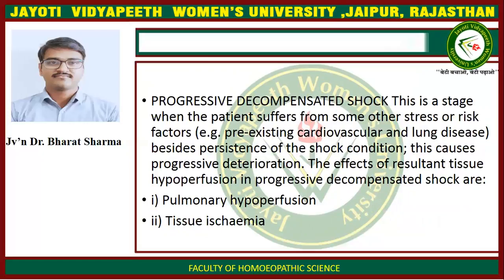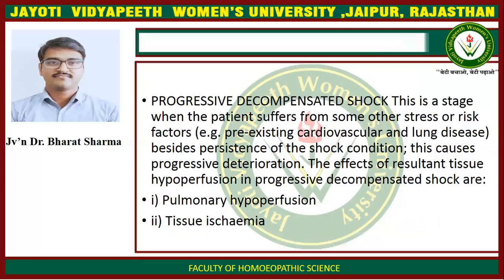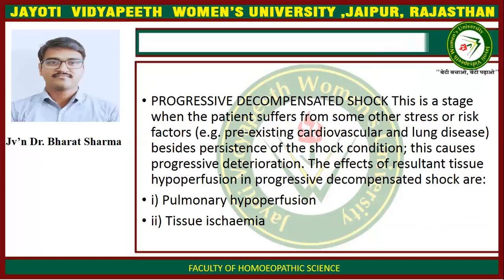The second stage is progressive decompensated shock. This is the stage when the patient suffers from additional stress or risk factors such as pre-existing cardiovascular and lung disease, in addition to the persistence of the shock condition, causing progressive deterioration. The effects of resultant tissue hypoperfusion include pulmonary hypoperfusion and tissue ischemia.